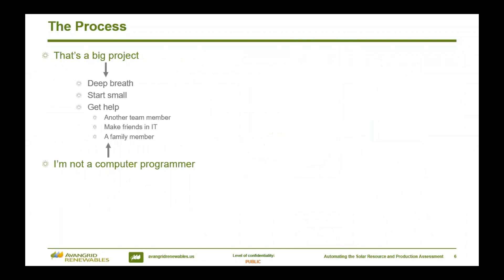It's also really helpful to have a network of people who are experienced in your coding language, especially if you're newer to it. This can be another team member, someone in IT, it can just be a family member — they don't need to be in the solar industry. I talk to other people who have no experience in solar all the time about Python, because I need help with the language; I don't need help with the solar modeling part.